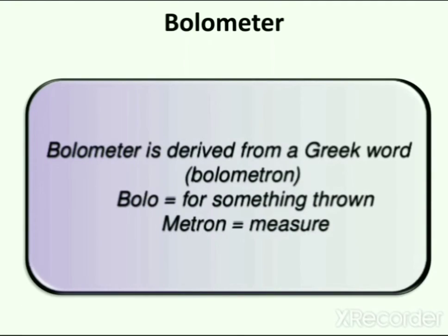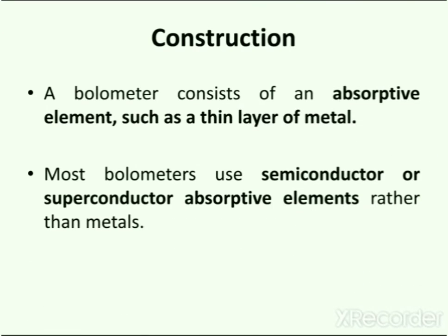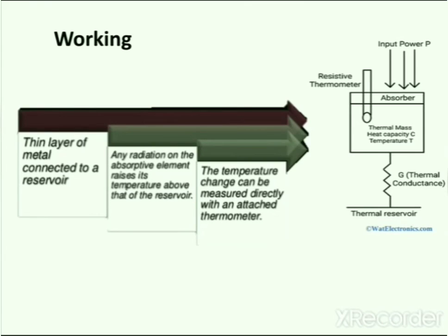A bolometer consists of an absorptive element such as a thin layer of metal connected to a thermal reservoir through a thermal link. The thermal reservoir is generally maintained at a specific constant temperature. When any radiation falls on the absorptive element it raises its temperature above that of the reservoir — the greater the absorbed power, the higher the temperature. The temperature change can be measured directly with an attached resistive thermometer, or the resistance of the absorptive element itself can be used as a thermometer.